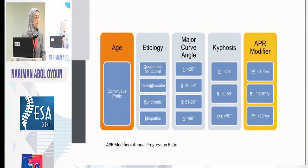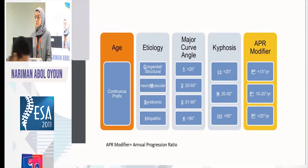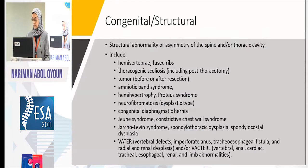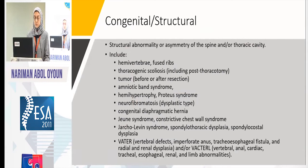The APR modifier is the annual progression ratio, which decides if this curve is rapidly progressive and needs intervention, or slowly progressive so surgery can be delayed a year or two. Structural or congenital anomalies put the patient in the C group — like hemivertebral fused ribs, thoracogenic scoliosis after thoracotomy or correction of congenital heart disease, hemihypertrophy, and dystrophic neurofibromatosis. These are strong structural changes that affect the spine.